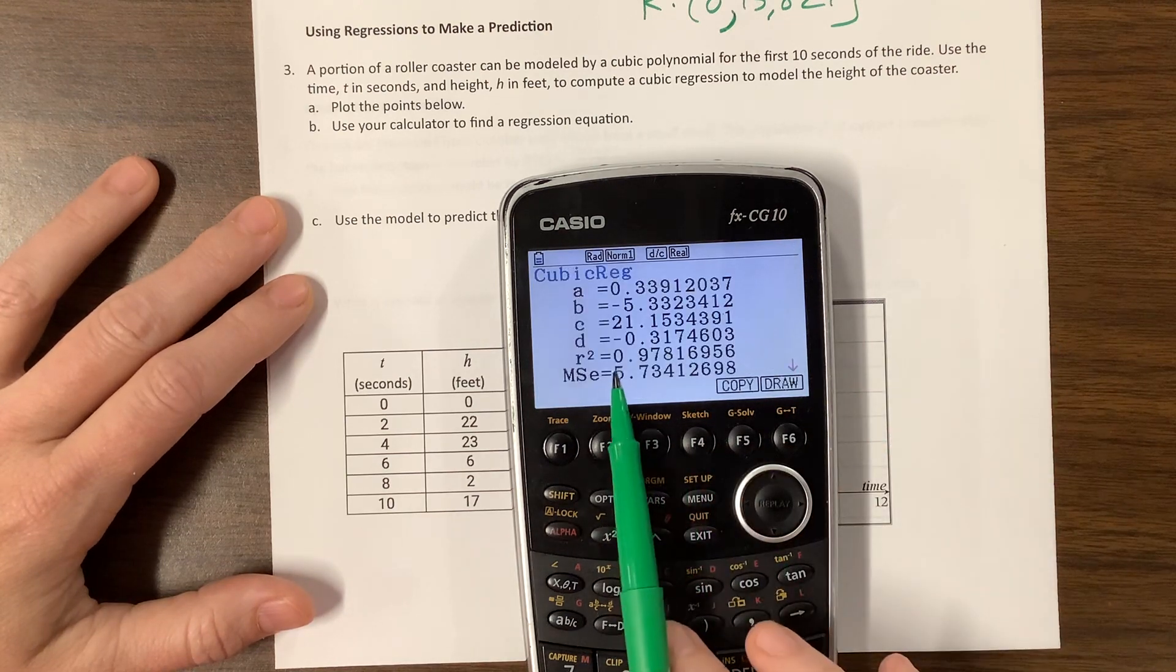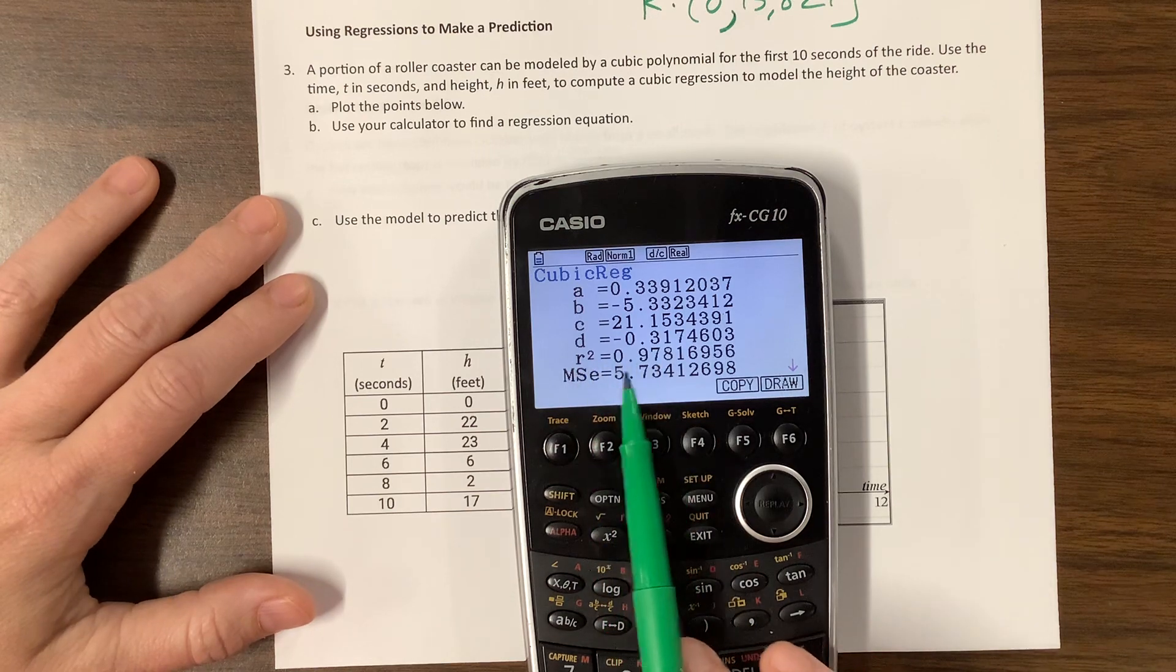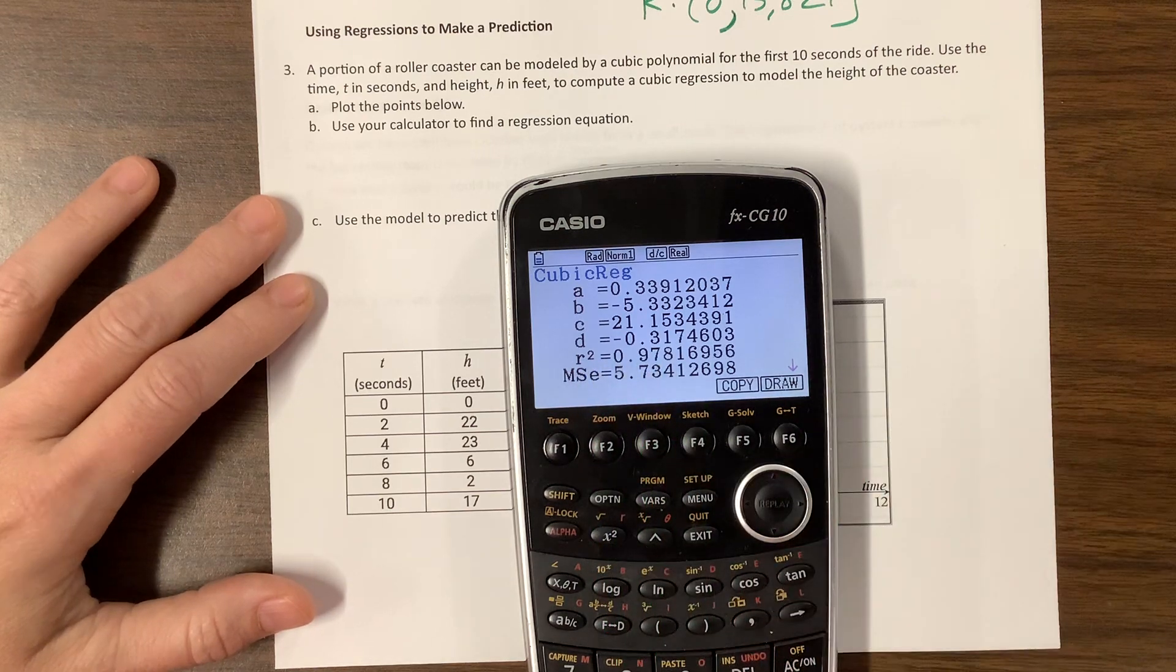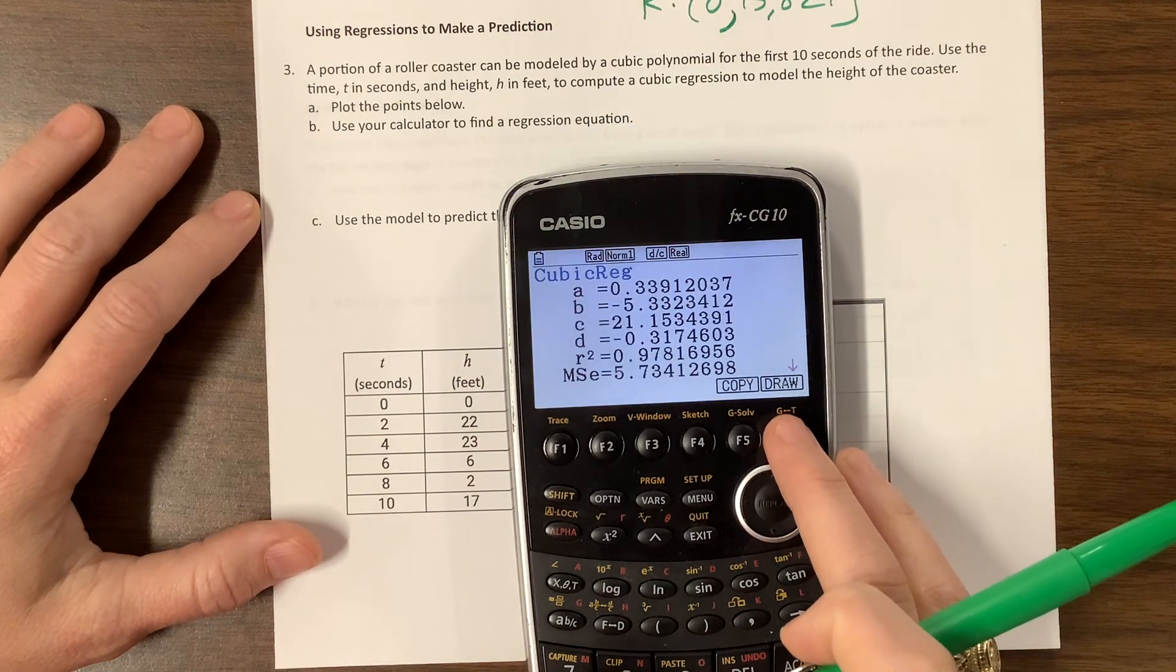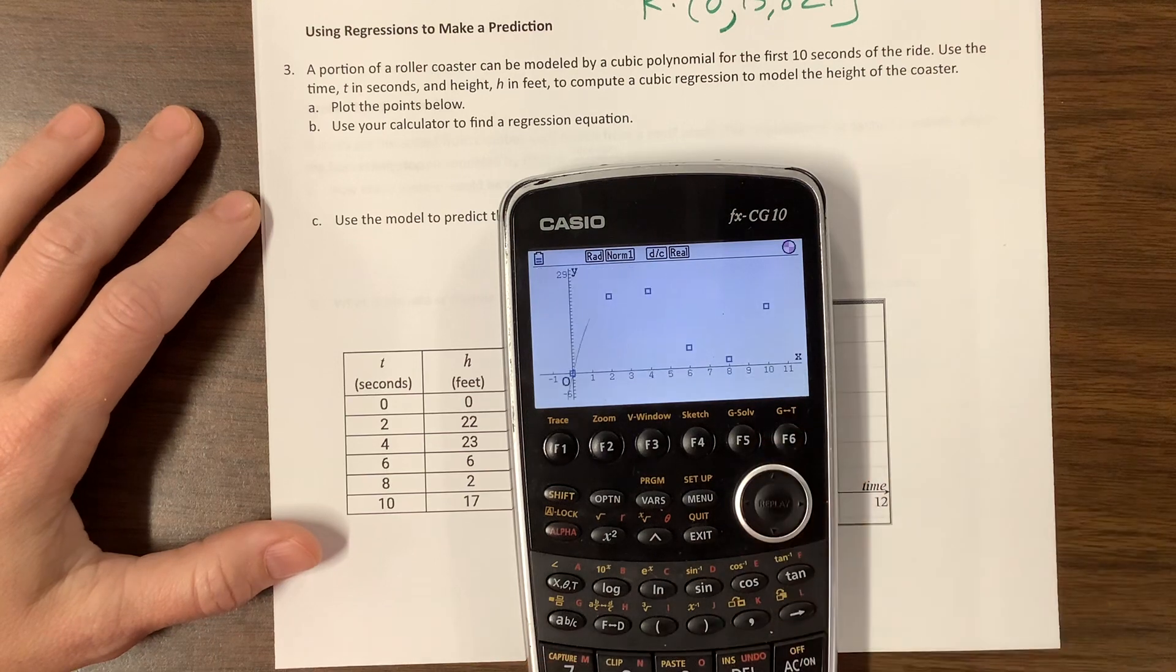And so the way that we know is the closer this r squared value is to 1, the better off we are. Let me show you what we can do. We can copy this into y1, and then I can have it draw those points.